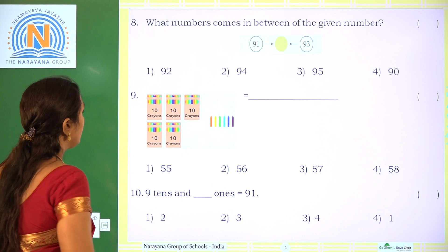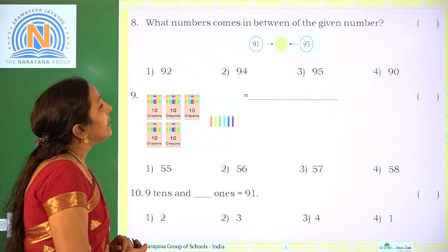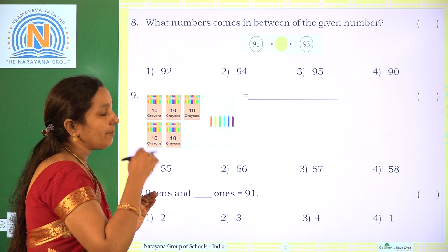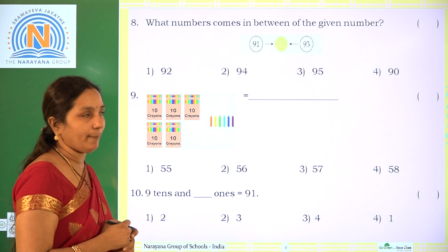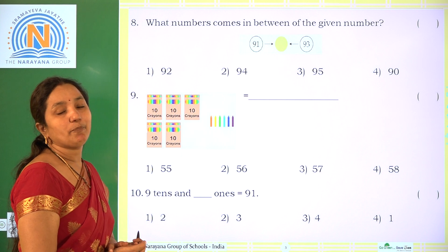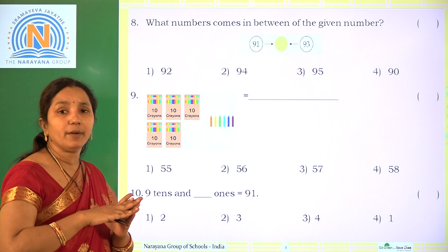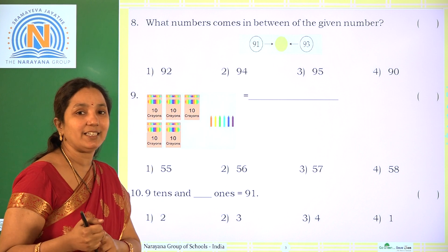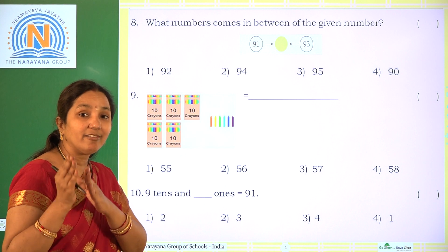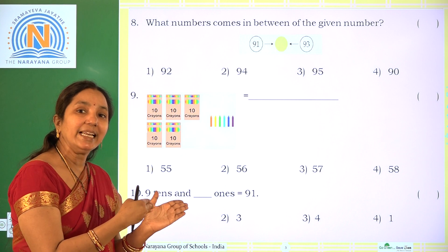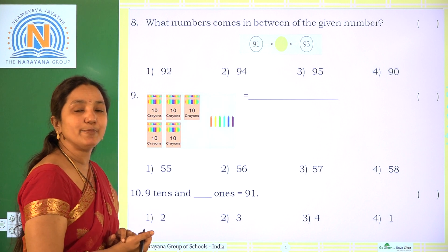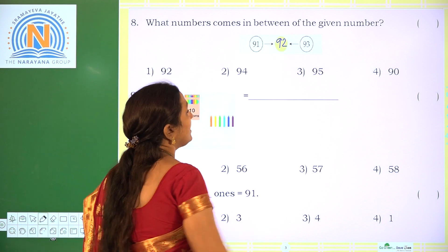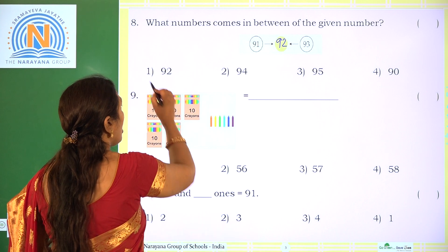Next one. What number comes in between the given numbers? The given numbers are 91 and 93. Count: 91, 92, 93. The number just after 91 and before 93 is 92. The correct option is option 1.